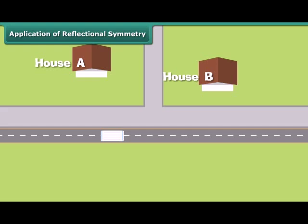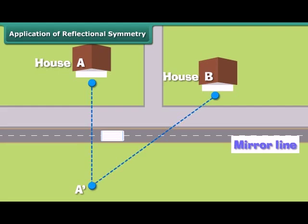Let us find out. We can use reflectional symmetry here. Let A prime be the image of A in the mirror line which is the street here. Now join the points A prime and B. You can see that at point P, the mirror line and A prime B meet. Thus, point P is the ideal place for Sharma to park his van.